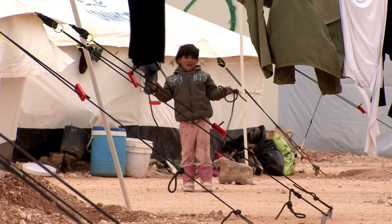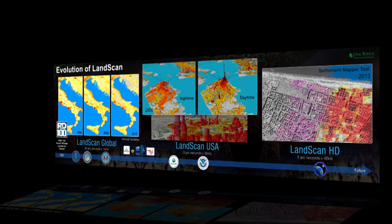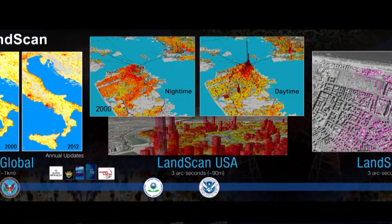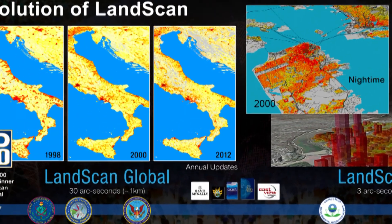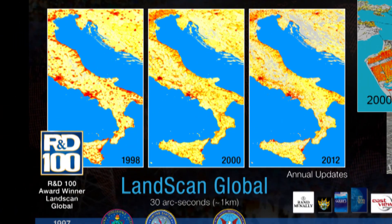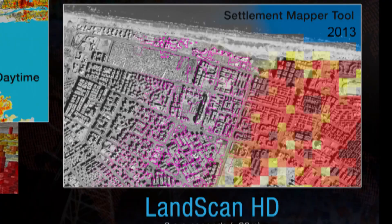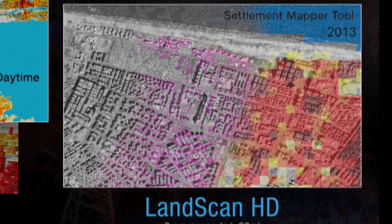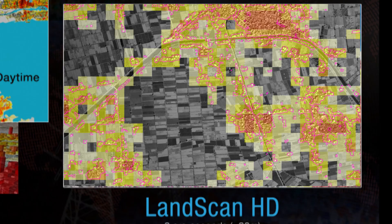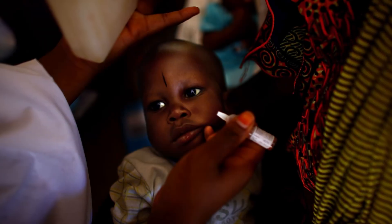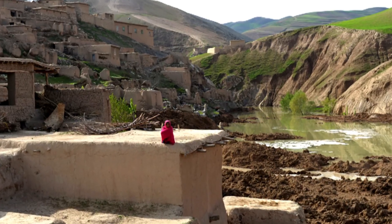At Oak Ridge National Laboratory, we are committed to moving forward in our research and development of our three population databases — LandScan Global, LandScan USA, and LandScan HD — ensuring that the world's populations are accurately and rapidly accounted for, not missed amongst the crowds, or lost to the massiveness of the Earth.